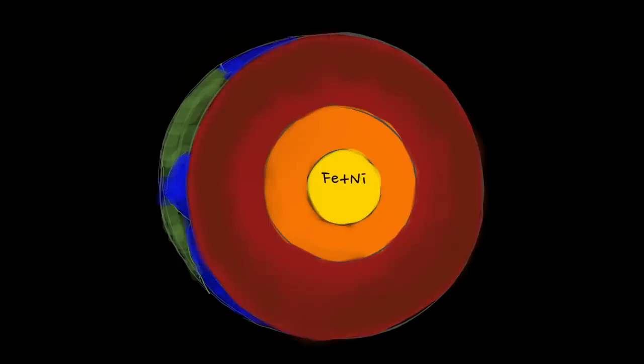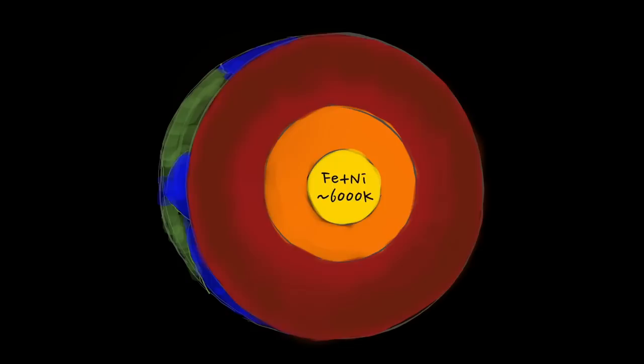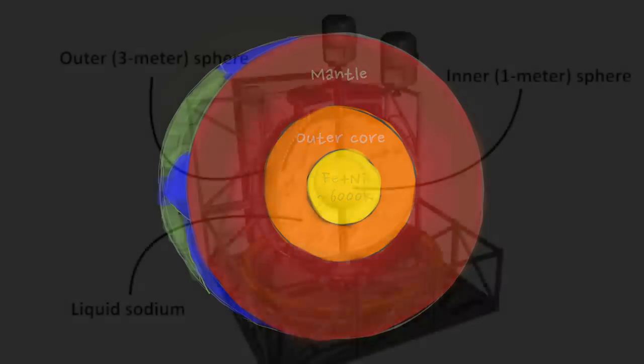However, the temperature of the inner core is nearly 6000 Kelvin, which is way above their Curie temperatures. And so there is no way that they could maintain a permanent magnetic field. The same is true of the solid mantle of the Earth. Much of it is way too hot for permanent magnets, which leaves only the liquid metal outer core as the place where Earth's magnetic fields could be generated.